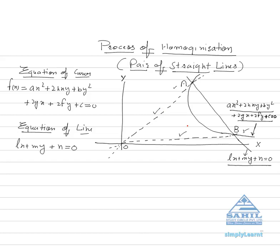The normal process to find the combined equation requires finding the point of intersection of the line with the curve, then finding equations of OA and OB separately and multiplying — a very lengthy process. The alternative is homogenization. As we know, the pair of straight lines passing through the origin is always a homogeneous equation in x and y, meaning every term is either x², y², or xy — no linear or constant terms.